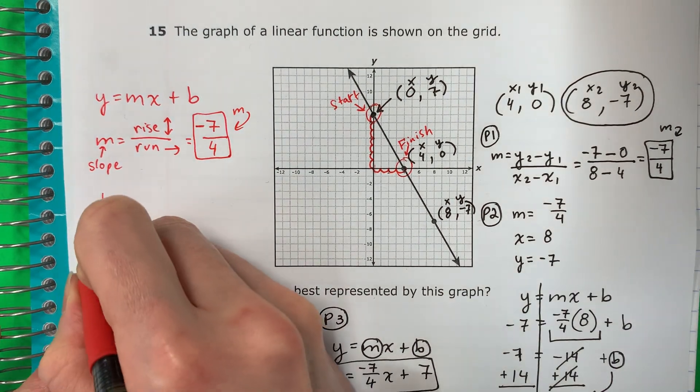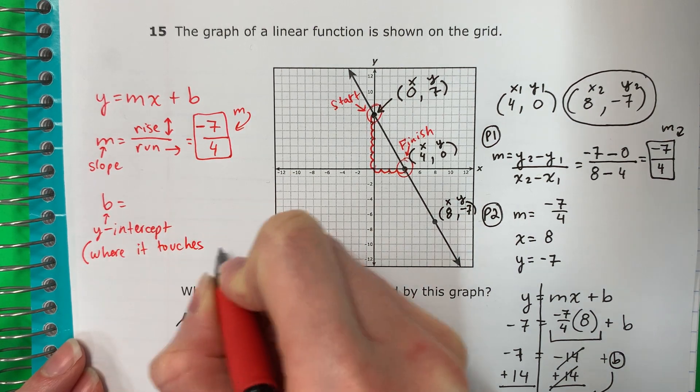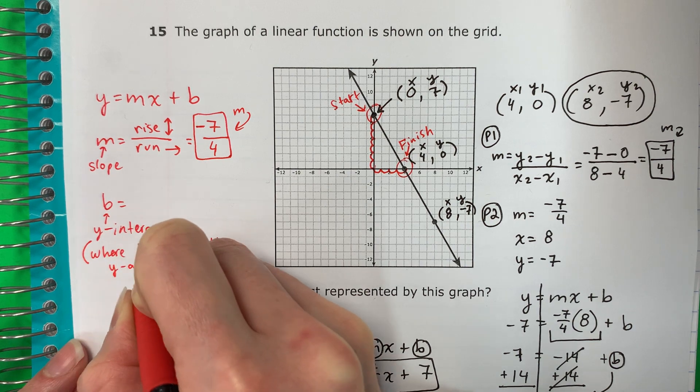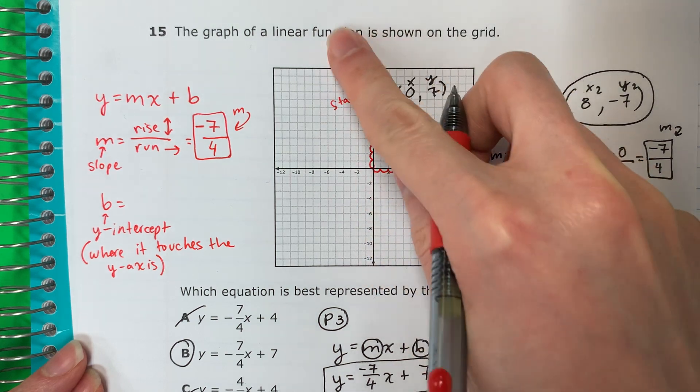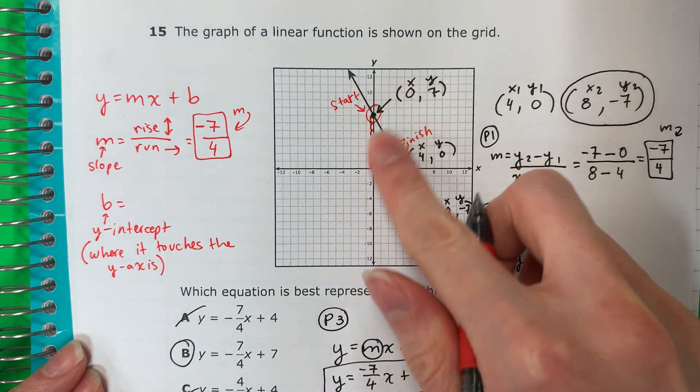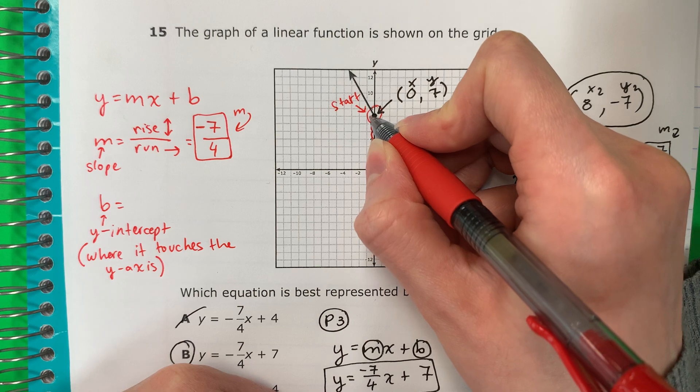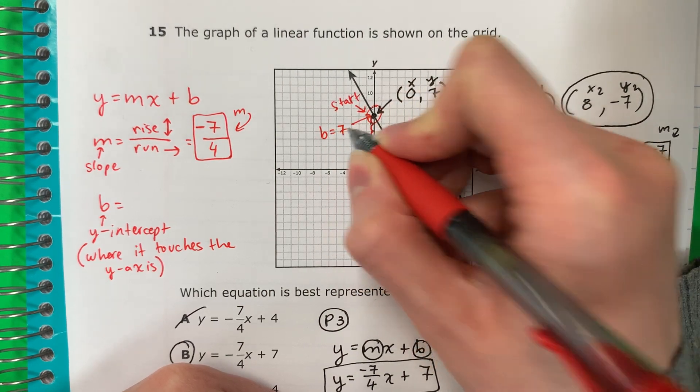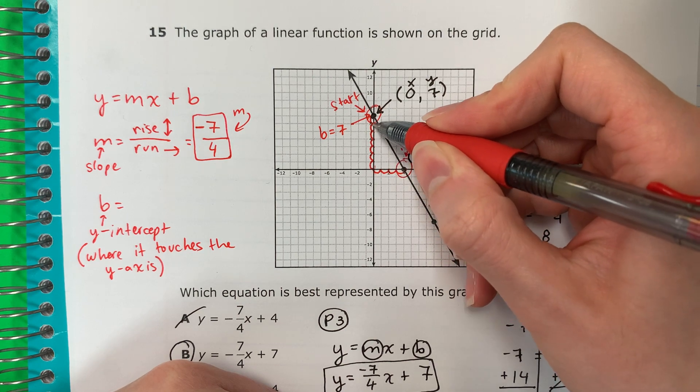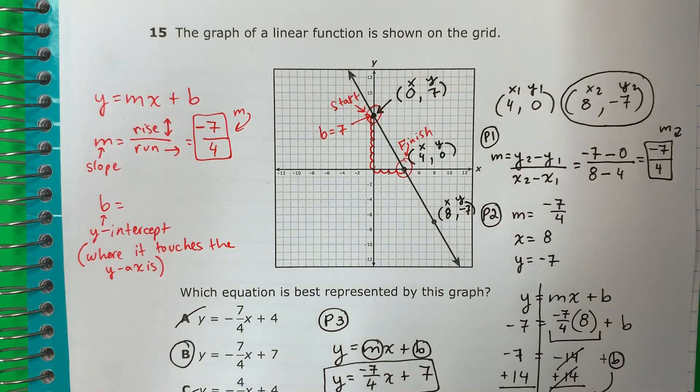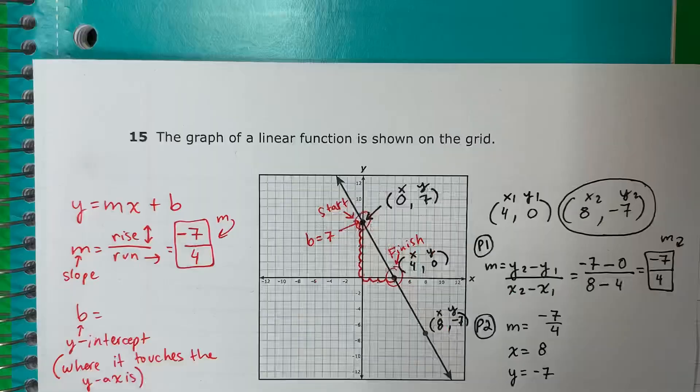B. Y-intercept. Y-intercept is where it touches the y-axis. Where the line touches the y-axis. Where does this line touch the y? It touches right over here. And you can't see it, but it touches at seven. Zero. One. Two. Three. Four. Five. Six. Seven. It touches at seven. Let me zoom in. That is seven. There's eight. Seven.